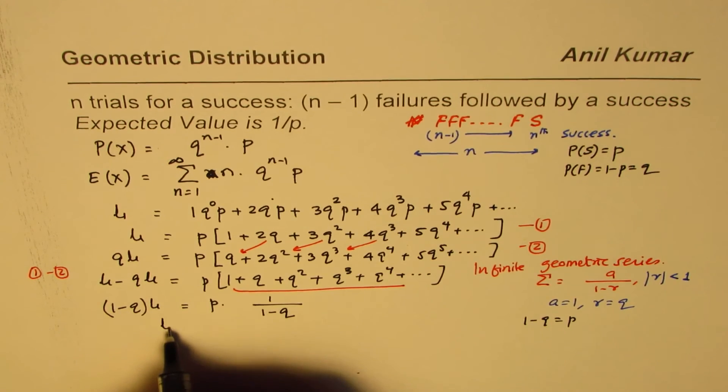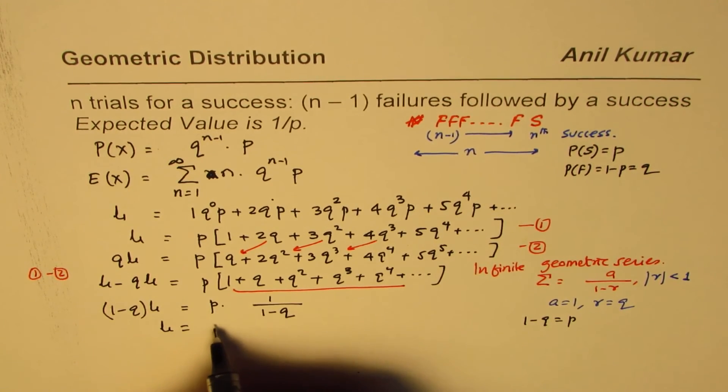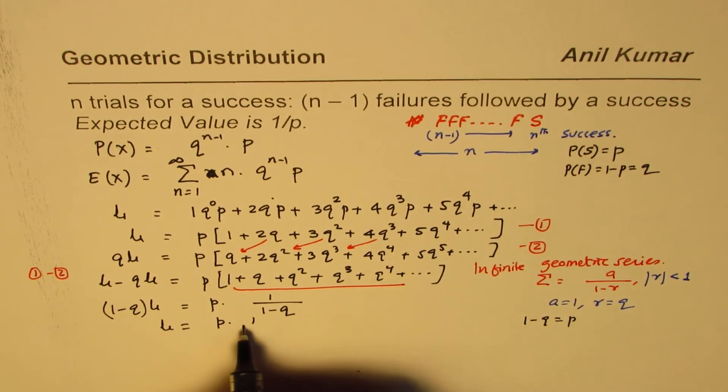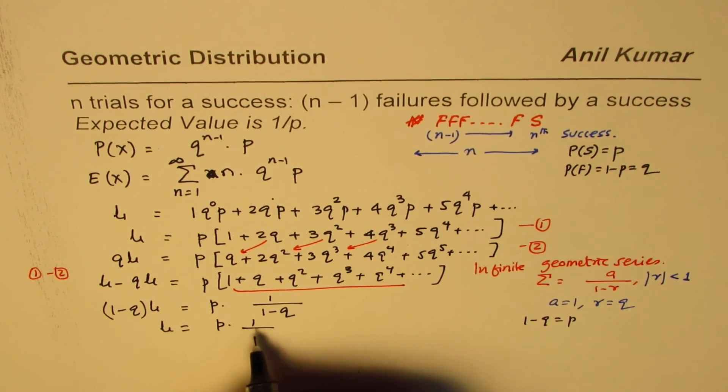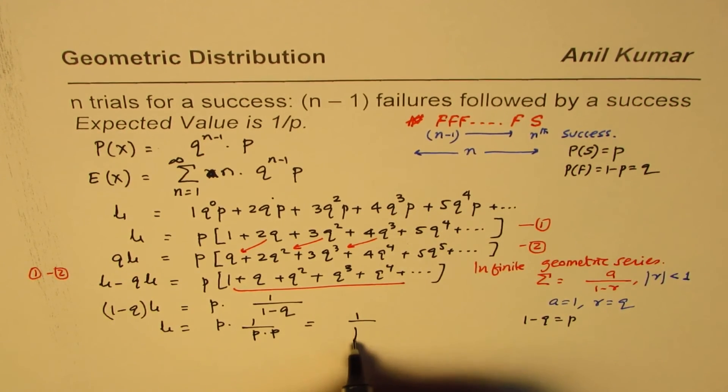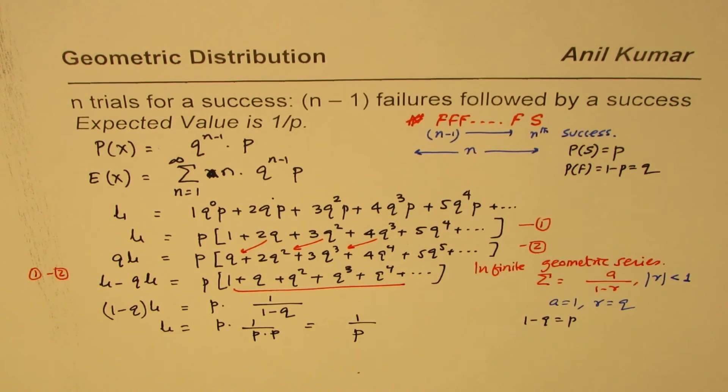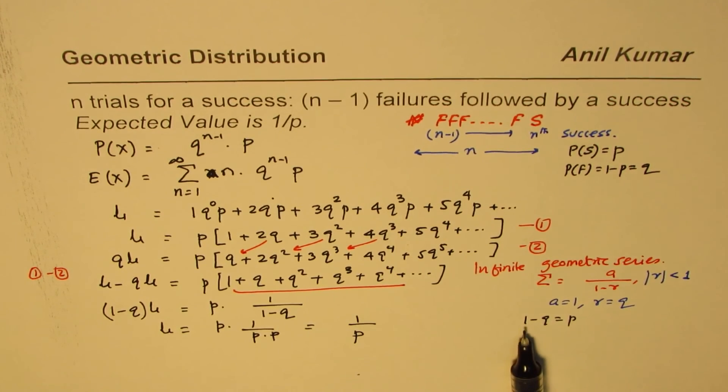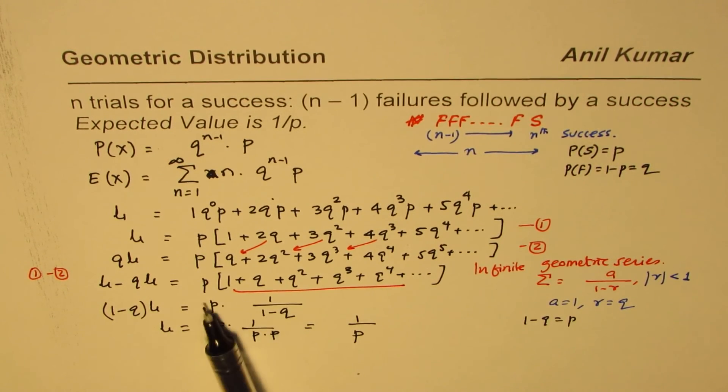So we get μ equals P times 1 over P. This gives you 1 over P as the result. Replacing 1 minus Q as P, the P's cancel, and you get μ equals 1 over P.